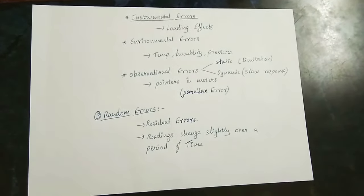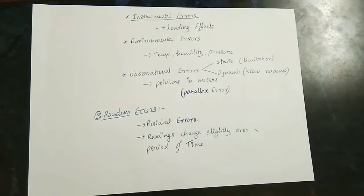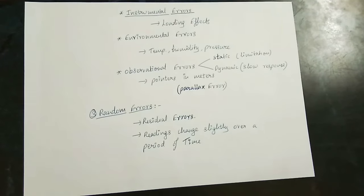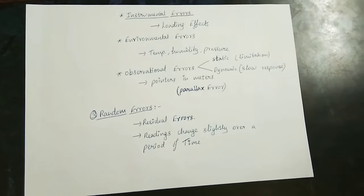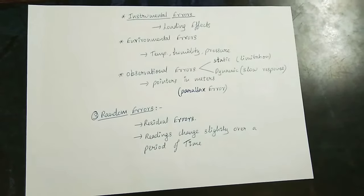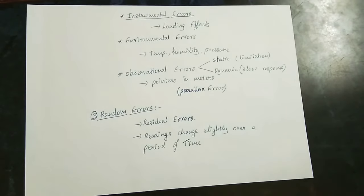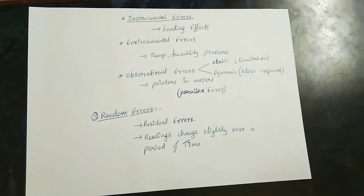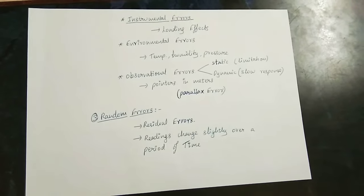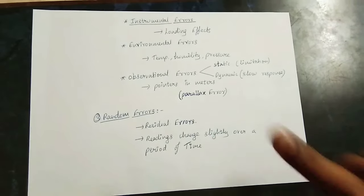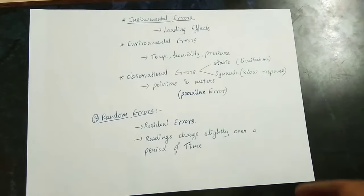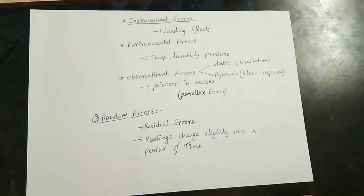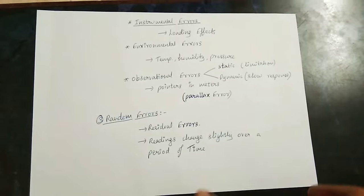The third type of systematic error is Observational error, which is a human error. Gross error is also a human error, but the observational error is specifically about how we read the instrument — for example, problems with the pointer on an ammeter or altimeter and how we read the scale. This gives us what is called Parallax error.